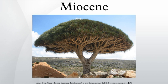The plants and animals of the Miocene were fairly modern. Mammals and birds were well established. Whales, seals, and kelp spread. The Miocene Epoch is of particular interest to geologists and paleoclimatologists, as major phases of Himalayan uplift had occurred during the Miocene Epoch affecting monsoonal patterns in Asia, which were interlinked with glaciations in the Northern Hemisphere.